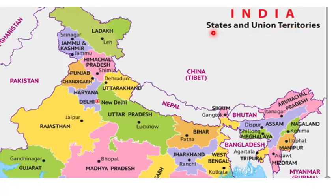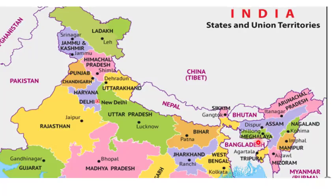Let us revise the names of the states and their capitals. Himachal Pradesh — Shimla. Uttarakhand — Dehradun. Punjab — Chandigarh. Haryana — Chandigarh. Uttar Pradesh — Lucknow. Bihar — Patna. Sikkim — Gangtok. Assam — Dispur. Arunachal Pradesh — Itanagar. Meghalaya — Shillong. Nagaland — Kohima. Manipur — Imphal. Mizoram — Aizawl. Tripura — Agartala.